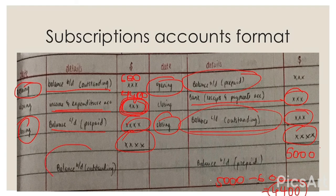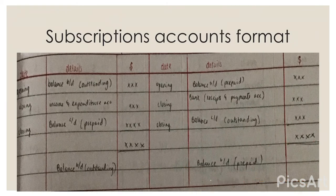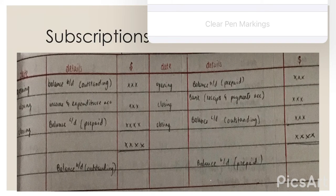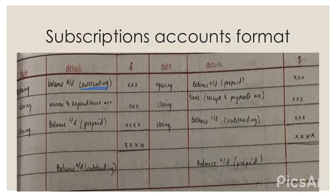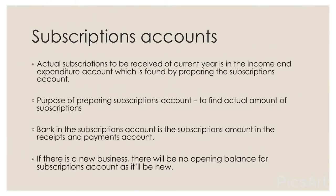After that, we write the brought-down entries. Carried down outstanding becomes balance brought down outstanding, and carried down prepaid becomes balance brought down prepaid, carrying the same amounts across. To remember which side is which: the debit side is outstanding and the credit side is prepaid. The last balance on each side mirrors the first — if the first is outstanding, the closing is also outstanding. The actual subscriptions for the income and expenditure account are found by preparing the subscriptions account.